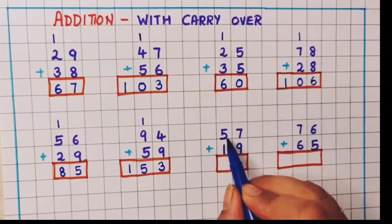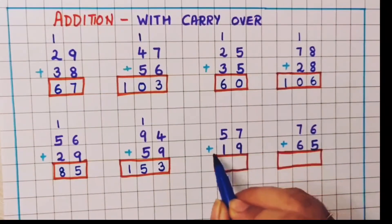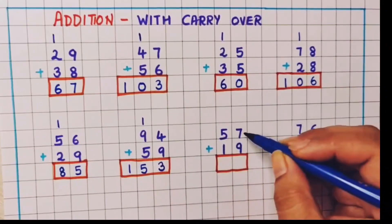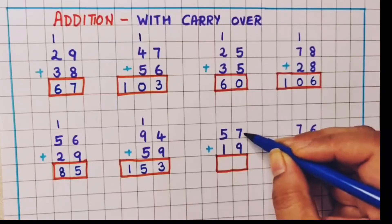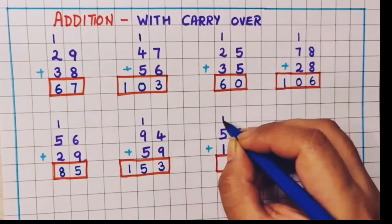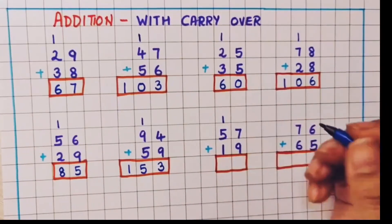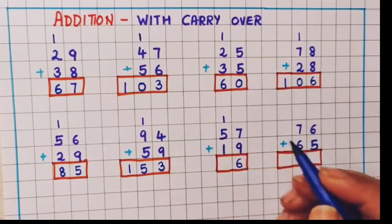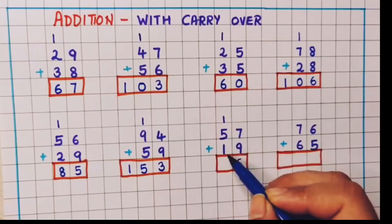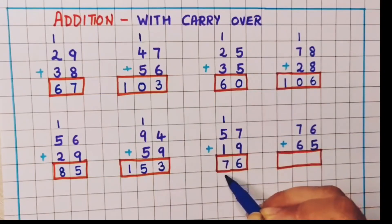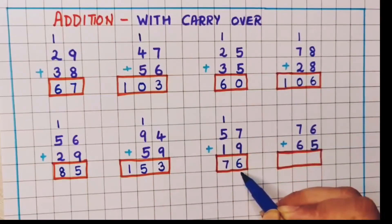Now the next problem is 57 plus 19. Again we will do the addition of 9 plus 7. 9 plus 7 is 16, so 1 will go as a carry over. I will write 6 here. Now 5 plus 1 is 6 and 6 plus 1 is 7. The answer is 76.